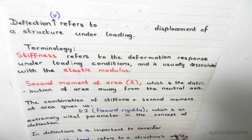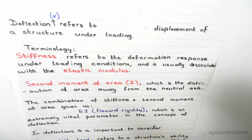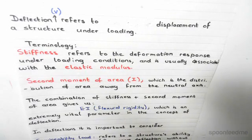Second, we have the second moment of area I, which was also seen before. This is the distribution of area away from the neutral axis. If we combine stiffness and the second moment of area,